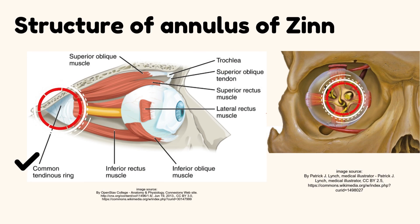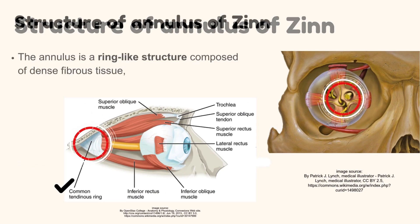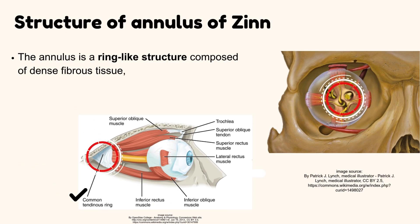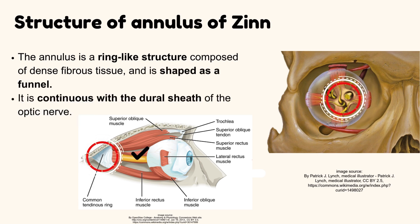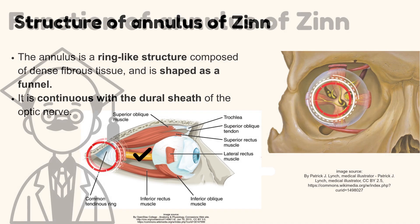Structure of the Annulus of Zinn. The annulus is a ring-like structure composed of dense fibrous tissue, and it is shaped as a funnel. It is continuous with the dural sheath of the optic nerve.